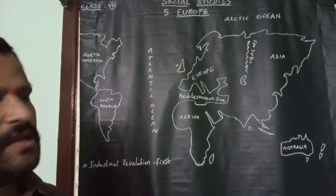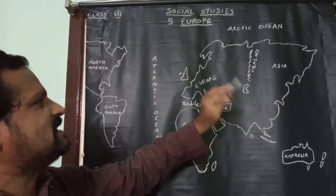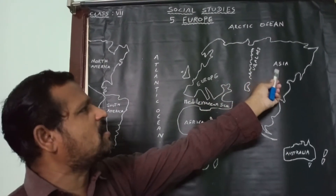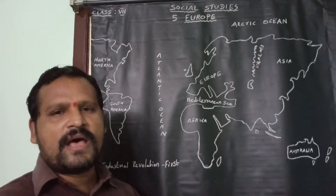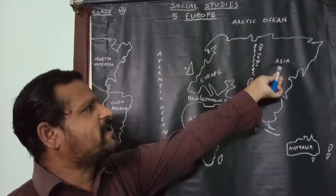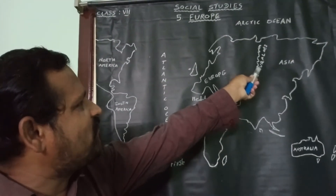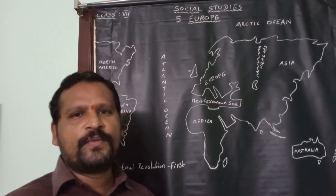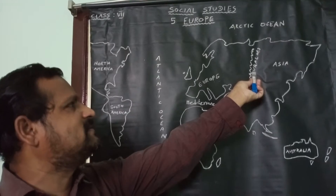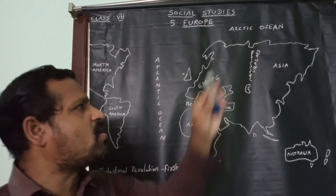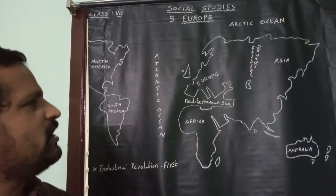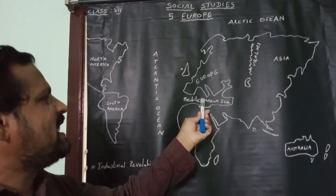Europe continent is bordered by the Ural Mountains on the east. The Ural Mountains separate Europe and Asia continent. The Ural Mountains are not so high, but they are covered with snow throughout the year. To the east side of the Ural Mountains we can see Asia continent, and to the west side we can see Europe continent.